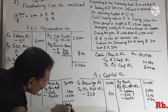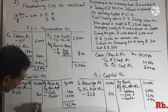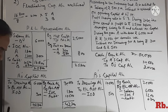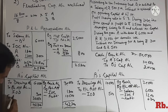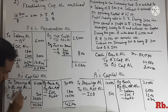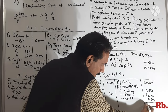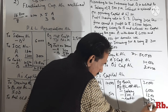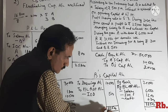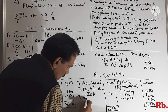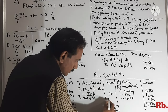Ab hamari saari transactions ki entries ho chuki hain, simply balancing karni hai. Yahan par aa raha hai Rs.42,300 — same amount Rs.42,300. Agar hum isme se minus kar dete hain to hamare paas amount aa jayega Rs.36,000, balance c/d. Isi tarah yahan bhi balancing kar lete hain: total aayega Rs.33,500 — balance c/d Rs.33,500. Is mein se Rs.10,500 minus karenge to balance aa jayega Rs.23,000.